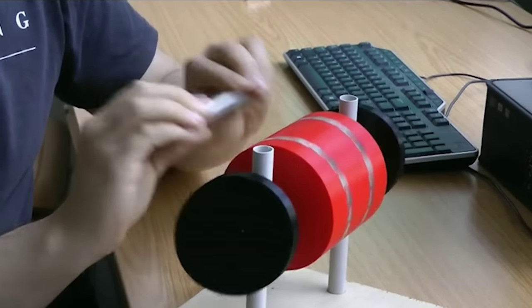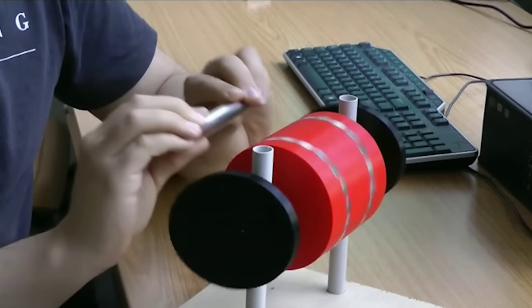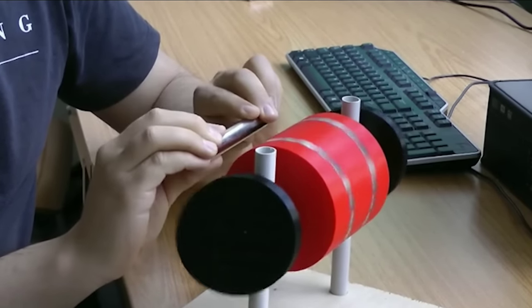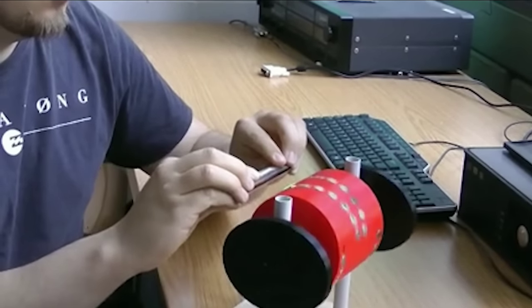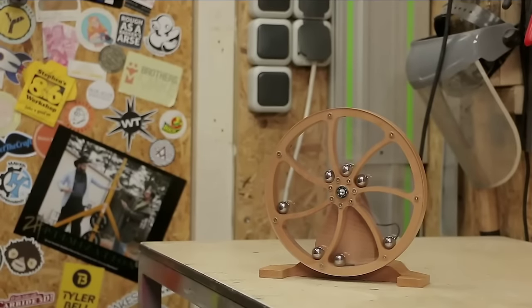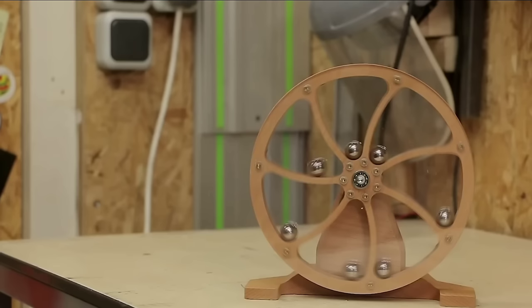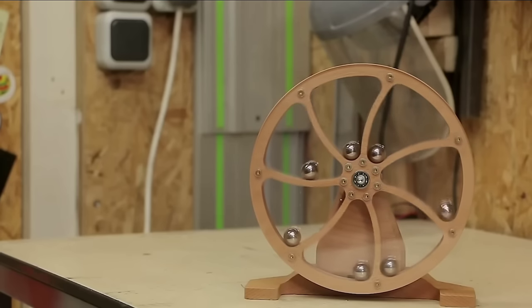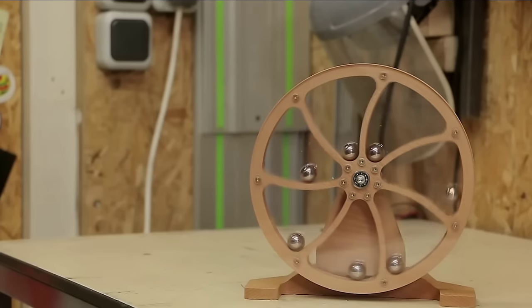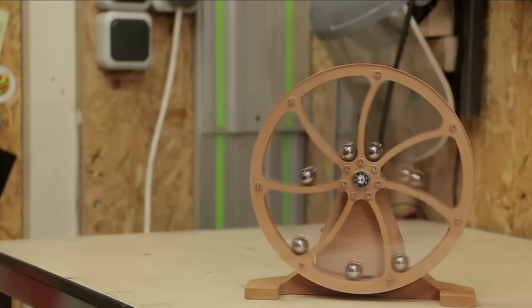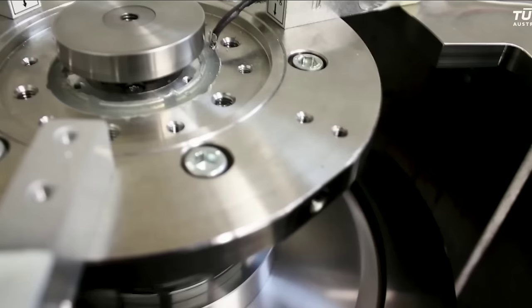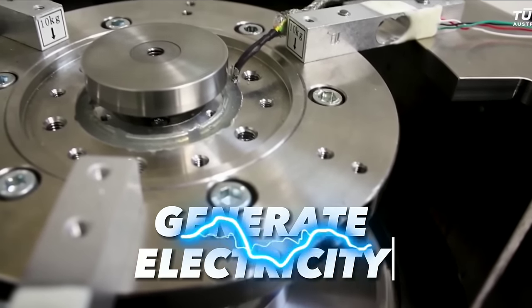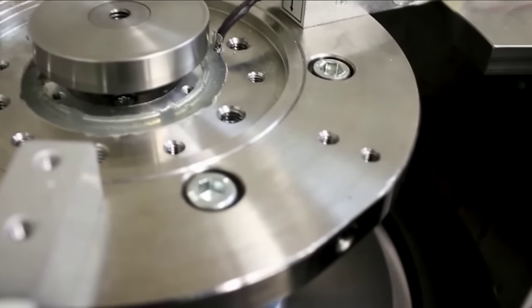So what is a magnet motor and how does it work? Well, a magnet motor uses magnets to create perpetual motion that can power a generator and produce free electricity. The basic idea is to arrange magnets in such a way that they repel each other and create a continuous rotation of a wheel or a shaft. This rotation can then be used to drive a generator and generate electricity. Sounds simple, right? But there's a catch.